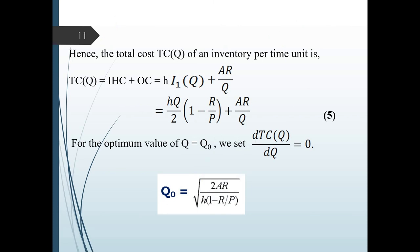The total cost of the inventory system per time unit, TC(Q), is the sum of inventory holding cost and ordering cost. Inventory holding cost is H times the number of units in the inventory system, and ordering cost is AR/Q. So the total cost is: TC(Q) equals H times (Q/2) times (1 minus R/P) plus AR/Q.